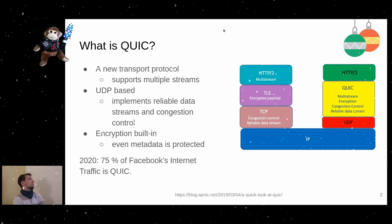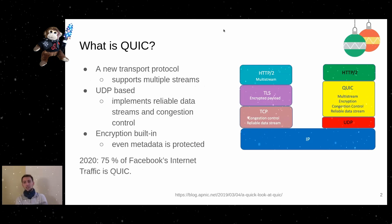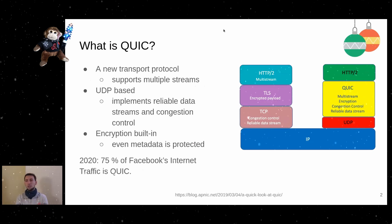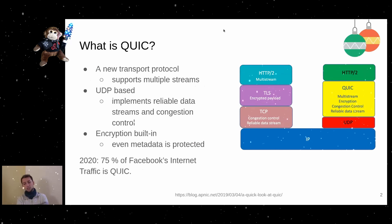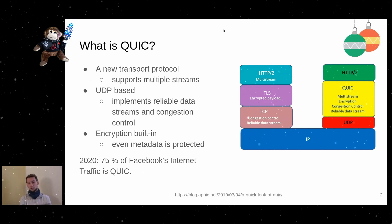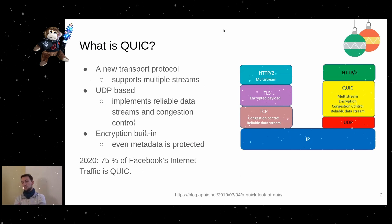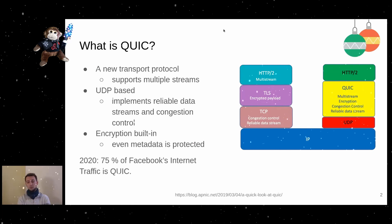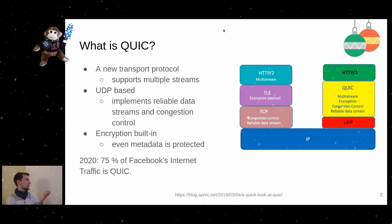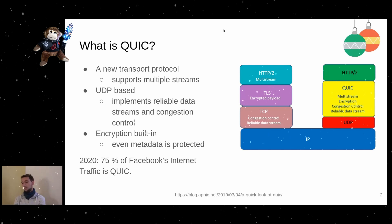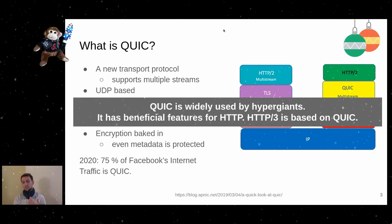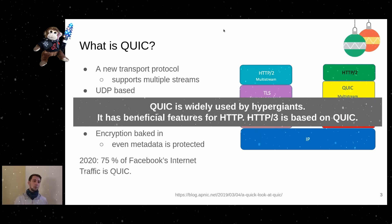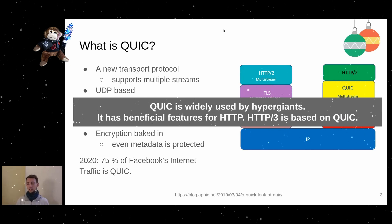Let me introduce the protocol. QUIC is a relatively new transfer protocol that supports multiple streams. It's UDP-based, so you can send it over the general internet without the problems of new protocols not being adopted. On top of UDP, it implements reliable data streams and congestion control — features you know from TCP — and it also encapsulates encryption, optimizing for latency. By 2020, already 75% of Facebook's internet traffic was QUIC, and other hypergiants adopted it as well.